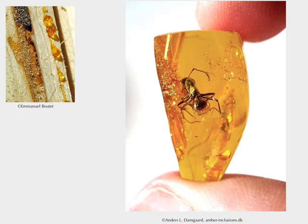Amber: certain trees release a sticky sap which can become fossilized under the right conditions. Amber can contain fossils — bees, pollen, little plant parts, even a lizard trapped in amber. We see a lot of insect fossils from amber.